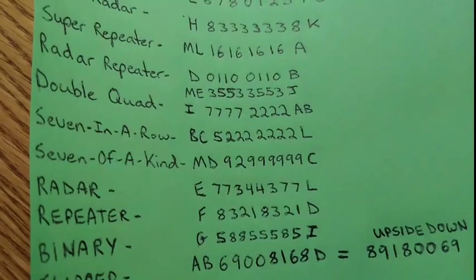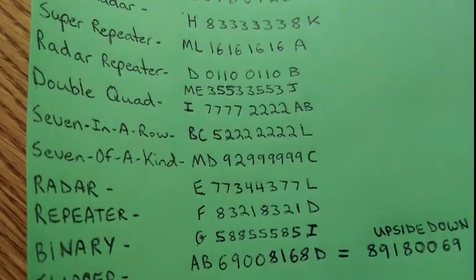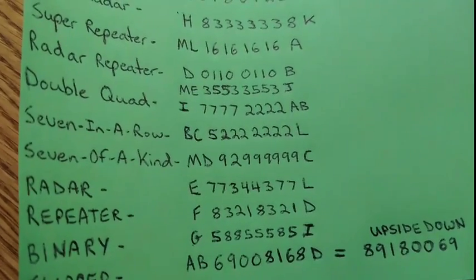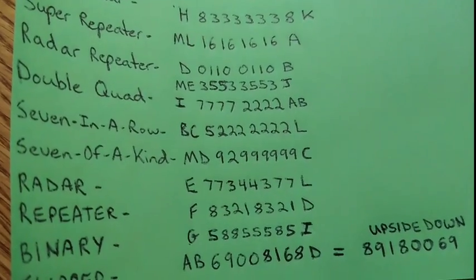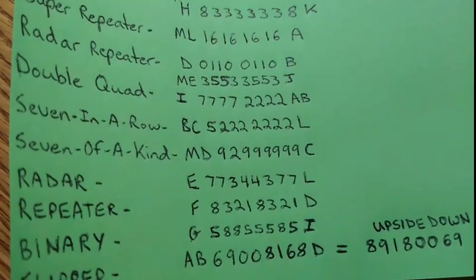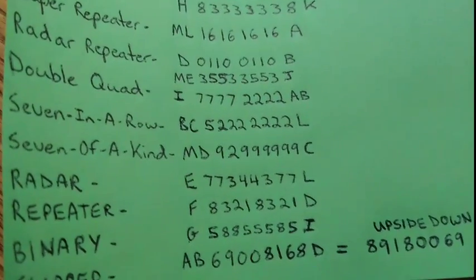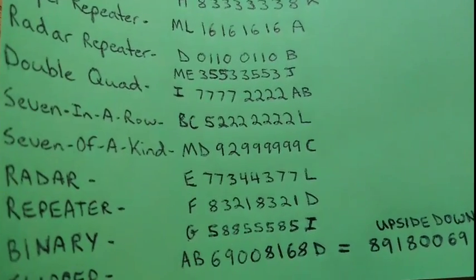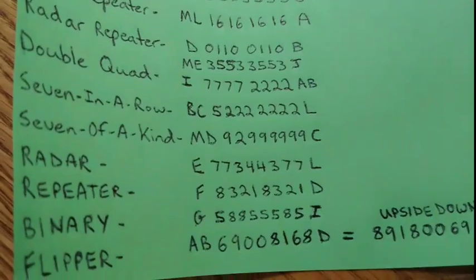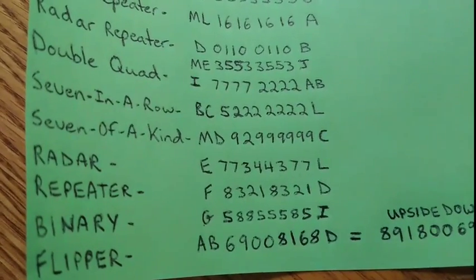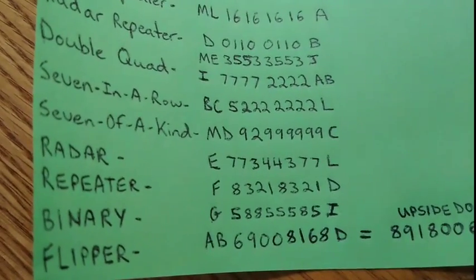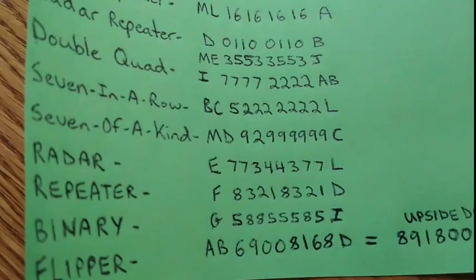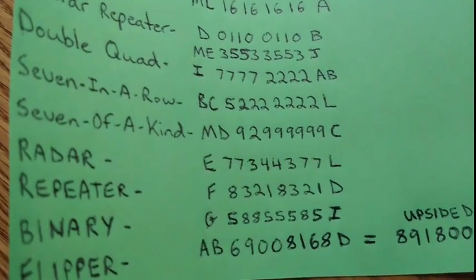Then we have 7 in a row — whatever the number could be, for example 5 followed by 2, 2, 2, 2, 2, 2, 2. Then we have 7 of a kind, which is not necessarily in a row, it's just seven of the same digit on the note — for example 9, 2, 9, 9, 9, 9, 9, 9.